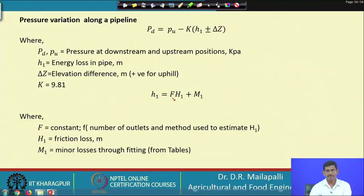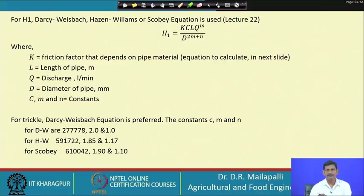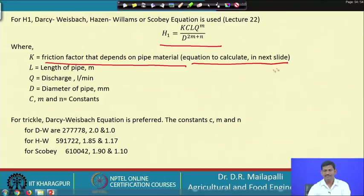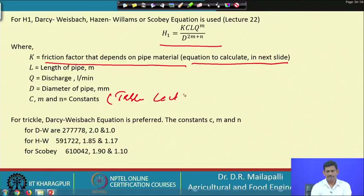The same F-factor principle used in sprinkler design is used in drip. H1 is estimated using three equations: Darcy-Weisbach, Hazen-Williams, and Scobey equation. The general form is H1 = K × C × L × Q^m / D^(2m+n), where K is a friction factor depending on pipe material, L is pipe length, Q is discharge, D is diameter, and C, M, N constants are taken from the table given in lecture 22. For trickle irrigation, the Darcy-Weisbach equation is preferred.